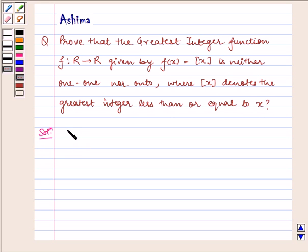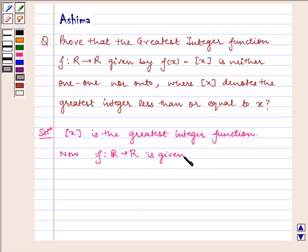Now let us write the solution. Here [x] is the greatest integer function. Now f: R → R is given by f(x) = [x].